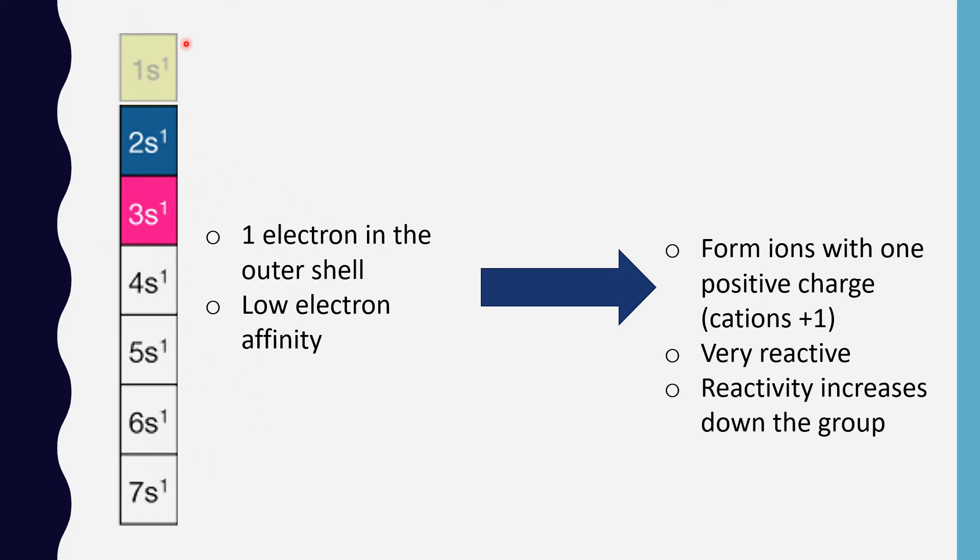Now we see here at the beginning of the group there is this element which is hydrogen. It is part of this group only because it has one electron and one proton. It's not part of the alkali elements; it doesn't have the same properties.